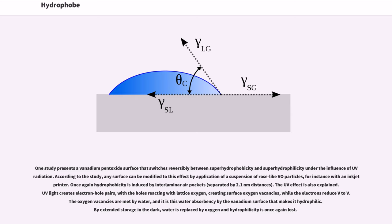While the electrons reduce V5+ to V3+. The oxygen vacancies are met by water, and it is this water absorbency by the vanadium surface that makes it hydrophilic. By extended storage in the dark, water is replaced by oxygen and hydrophilicity is once again lost.